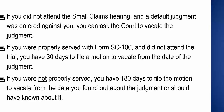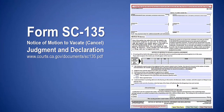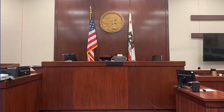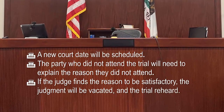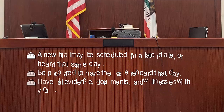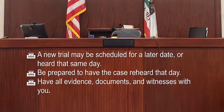To vacate a judgment, complete and file the Notice of Motion to Vacate Judgment and Declaration, form SC-135. After the notice of motion to vacate judgment is filed, a new court date will be scheduled. At the hearing, the party who did not attend the trial will need to explain the reason they did not attend. If the judge finds the reason to be satisfactory, the judgment will be vacated and the trial reheard. A new trial may be scheduled for a later date or heard that same day.